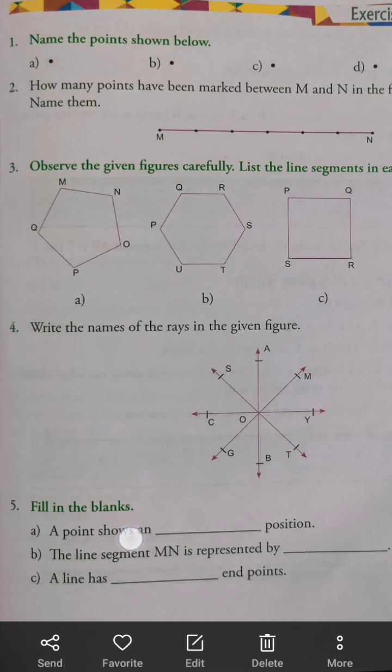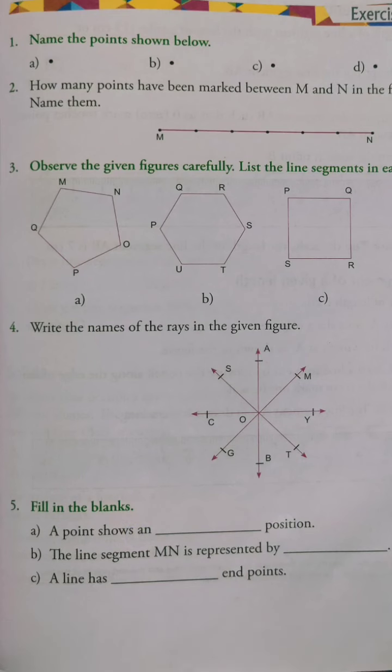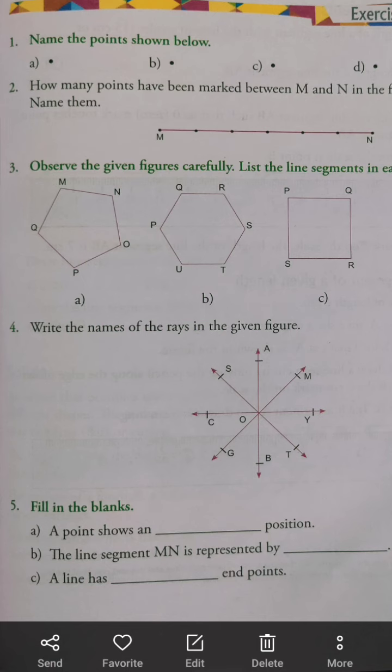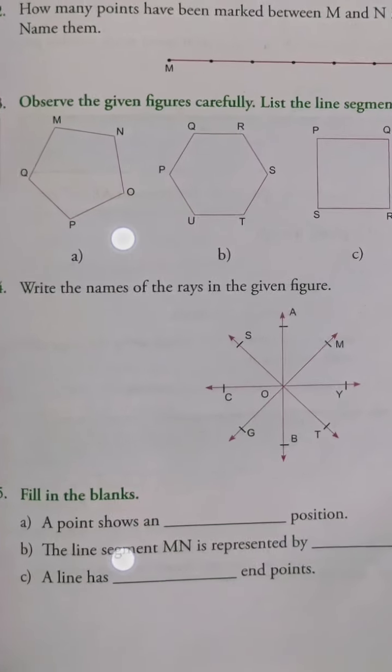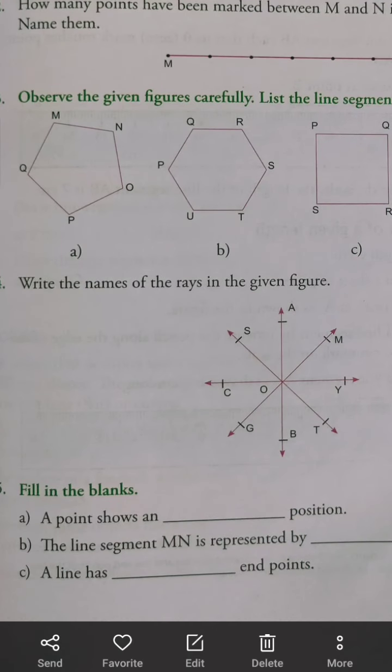Question number 5, first part. What is it? A point shows blank position. We just studied that a point shows us an exact position of something. So what we can write here? Exact position.